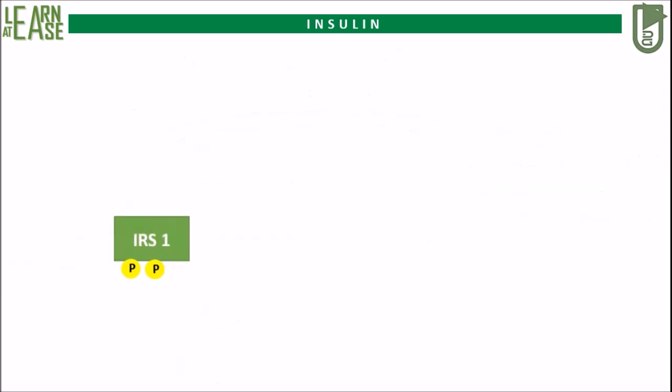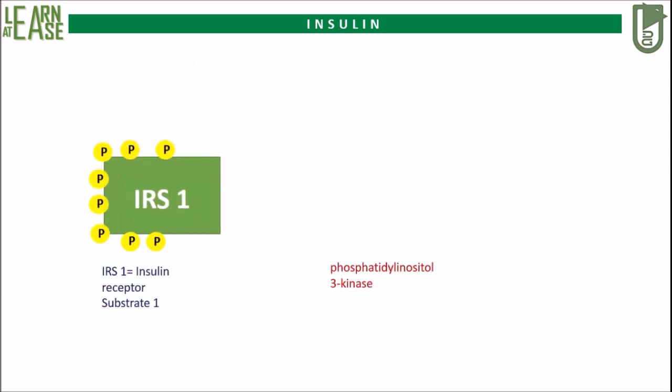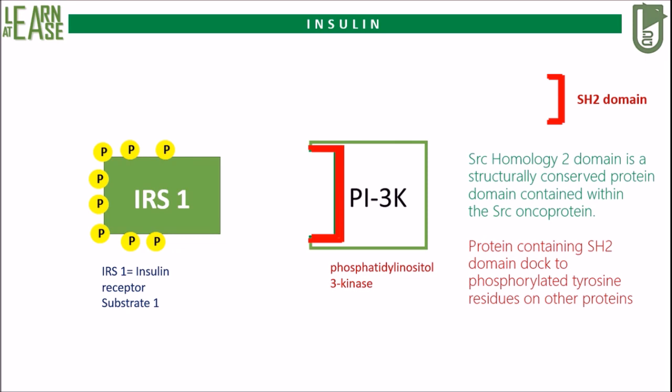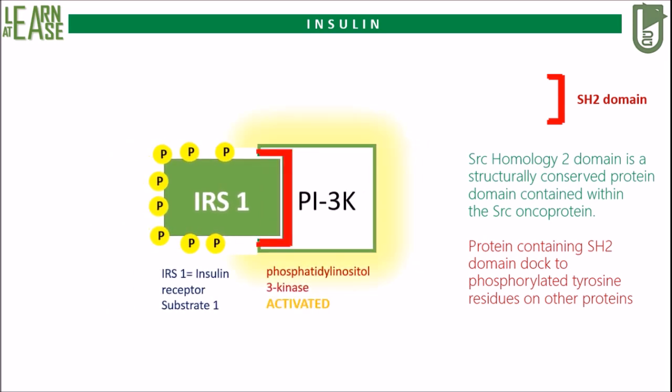Let us see this mechanism in detail. IRS1 and PI3K are shown here. PI3K possesses a protein domain named SH2, which is the SRC homology 2 domain. As additional information, the SRC homology 2 domain is a structurally conserved protein domain contained within the SRC oncoprotein. Proteins containing the SH2 domain dock to phosphorylated tyrosine residues on other proteins. The SH2 domain will aid PI3K to bind with IRS1 and cause its activation.